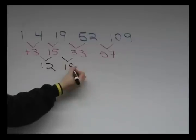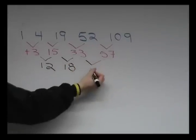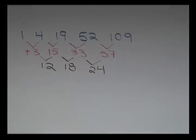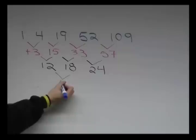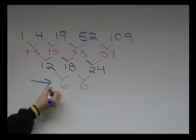Once again, the numbers are closer together, but still not the same. After one more try, we find out that these numbers have a common difference of 6 in the third row.